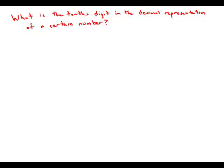What is the tenths digit in the decimal representation of a certain number? Statement number one tells us that the number is less than one-third. Well, one-third as a decimal is 0.333 repeating.